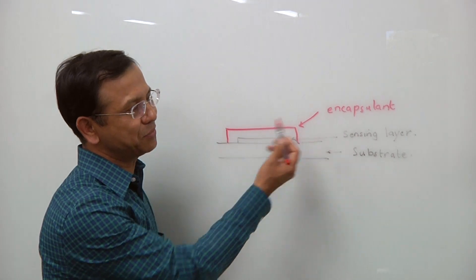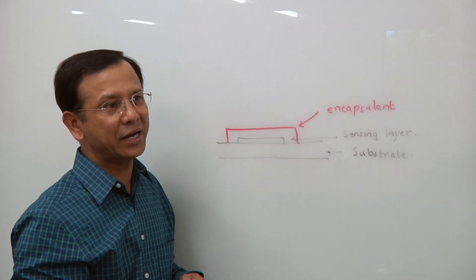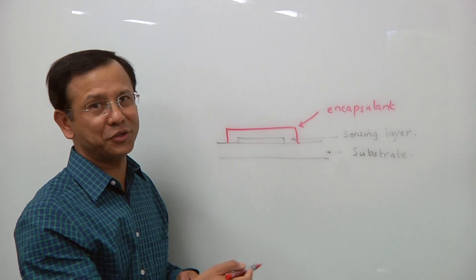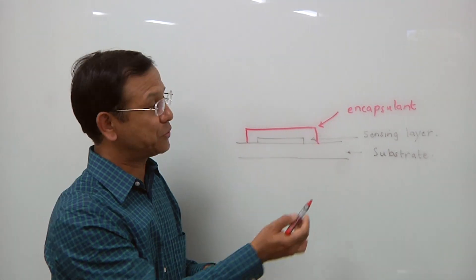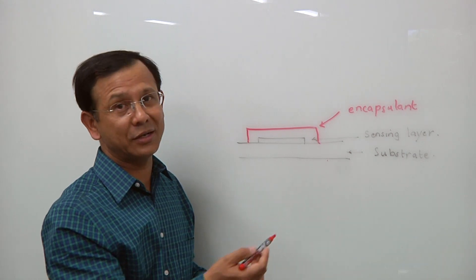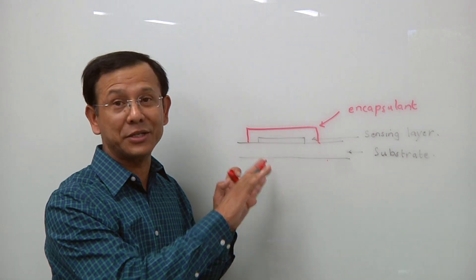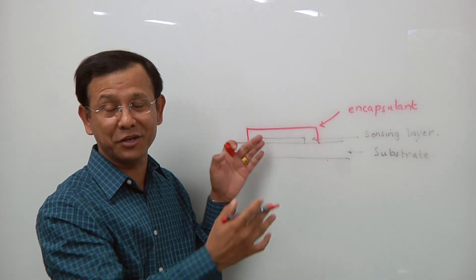This substrate also undergoes the same processing when we are processing those different layers. So this substrate has to survive that temperature and substrate is over 95% of the entire sensor. We cannot isolate substrate from the other components of the sensor. They come together.